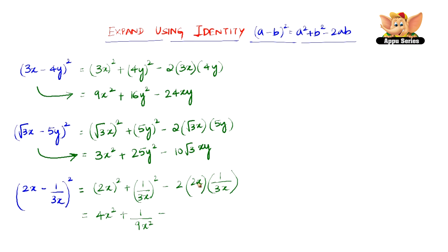Minus 2 × 2 = 4, and 4 × 1 = 4. We write the 3 as it is because it is only multiplied by 1 and x and x get cancelled. So the expansion of (2x - 1/3x)² is 4x² + 1/9x² - 4/3.